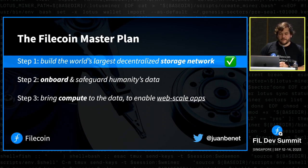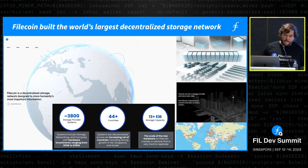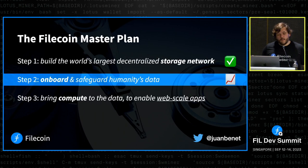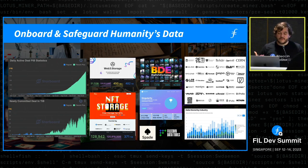Last year we started framing three big work streams as three steps in a broader master plan. Step one: build the world's largest decentralized storage network — and we've basically accomplished that by building a massive 10 exabyte scale network. Step two: onboard and safeguard humanity's data onto that network. We've been very hard at work on that, scaling all the data onboarding. Lots of on-ramps have been involved, lots of specific storage providers, lots of clients — we're bringing on a lot of super valuable data into the network.